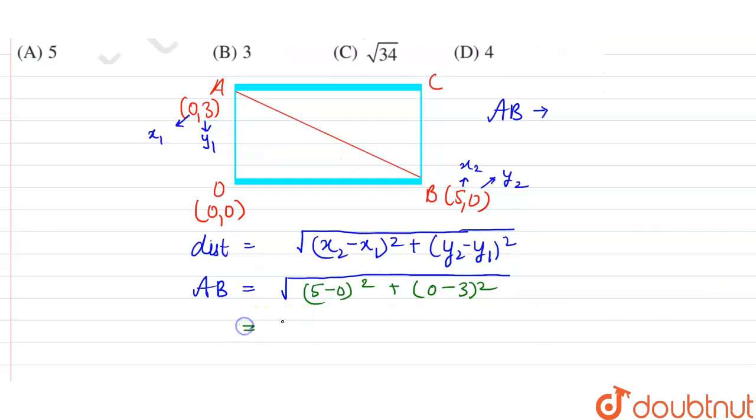Now accordingly, this is equal to under root of 5 square, which is 25, plus minus 3 square means 9. So 25 plus 9 is equal to under root 34.